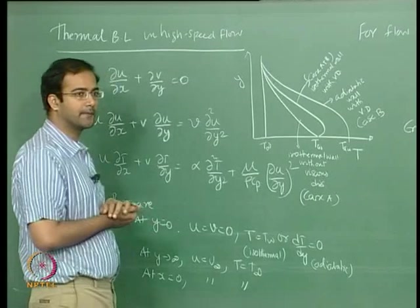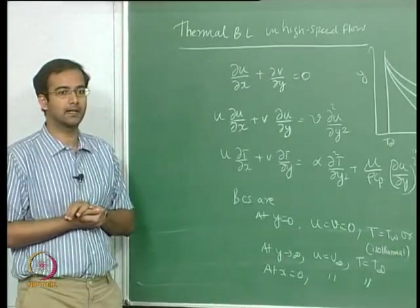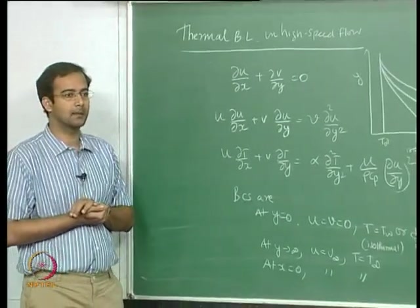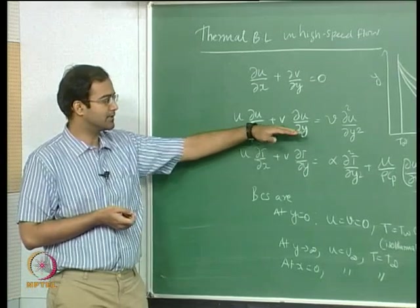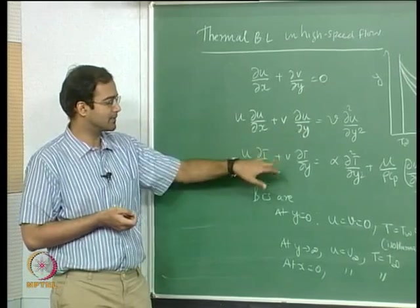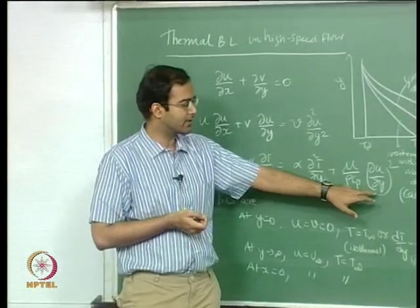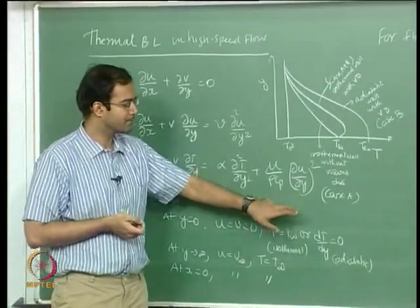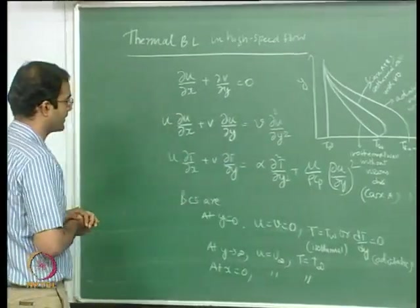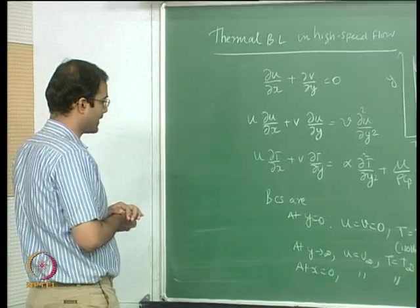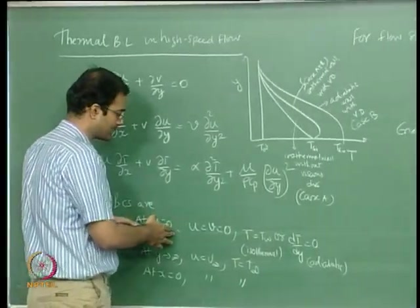Earlier, in the Falkner-Skan or Blasius case, the energy was completely decoupled — once you solve the momentum, you substitute the velocities and that is it. Here, you also need the velocity gradients, so there is a little bit more coupling, and these are the corresponding boundary conditions.